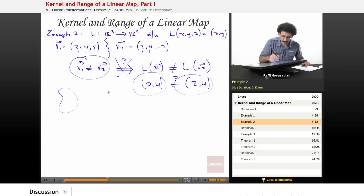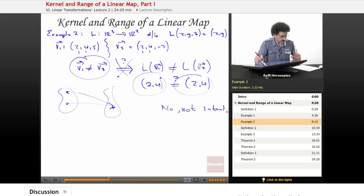In other words, what happened was these two spaces, I had two separate vectors in my departure space. I had this vector (2, 4, 5) and (2, 4, -7), they both mapped to the same thing. That's not one-to-one, this is two-to-one. So no, not one-to-one.